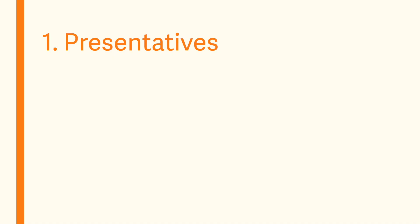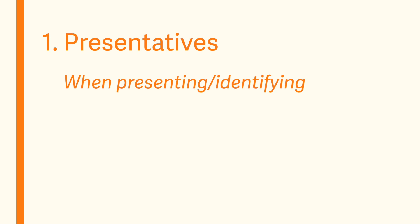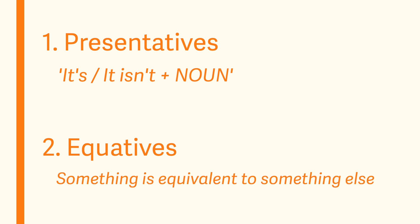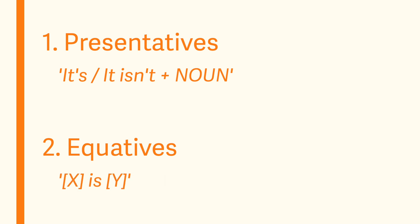Knowing whether you should use an equative or a presentative depends mostly on context, and a little bit on regional preference. Here's a short way to remember: use presentatives when you are presenting or identifying something — in English, 'it's' or 'it isn't' followed by a noun. Use equatives when you want to say that some noun is equal or equivalent to another noun — in English, 'X is Y' or 'X isn't Y.'